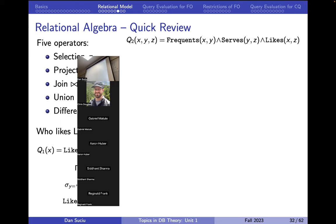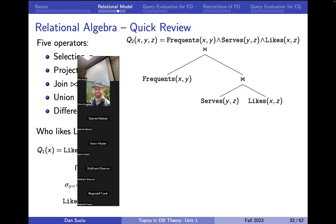Now let's see joins. Here is a query: return all triples drinker-bar-beer for which the drinker frequents the bar, the bar serves the beer, and the drinker likes it. This is expressed in relational algebra using joins. The join is a binary operation that takes two tables and combines tuples from them using some condition — usually written as a subscript. In our case, we assume the condition checks that values of shared variables are the same: the beer z served by y equals the beer z liked by x.